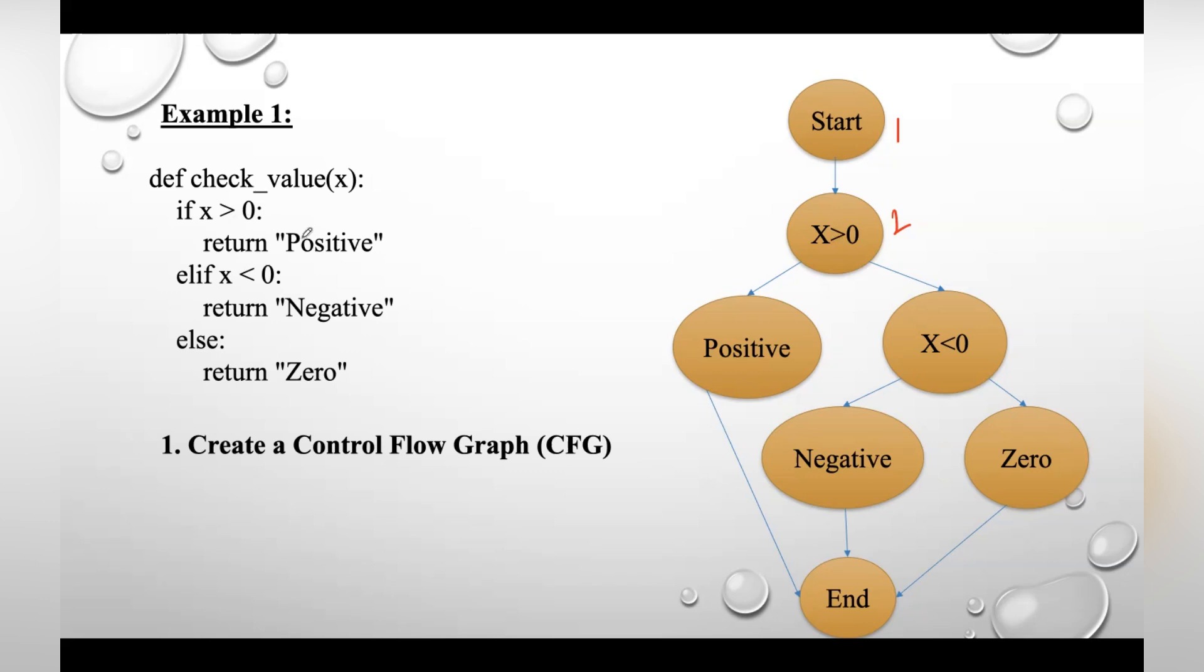If this condition is true, return positive—let's take it as block three. If this condition is false, then check if x < 0, which is taken as block four. If x < 0 is true, move to this block five.